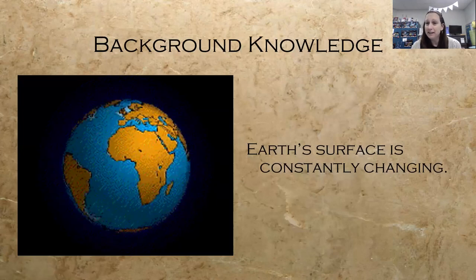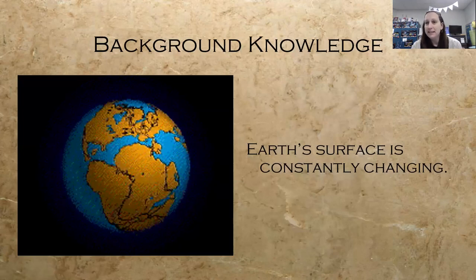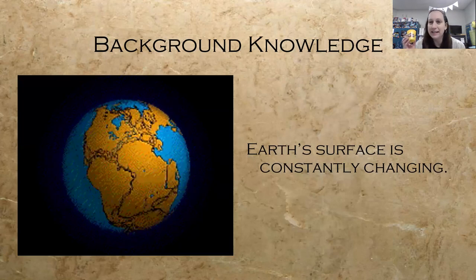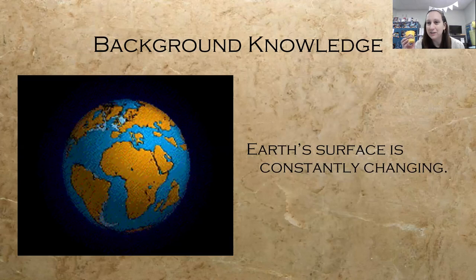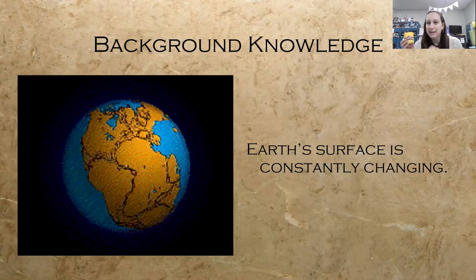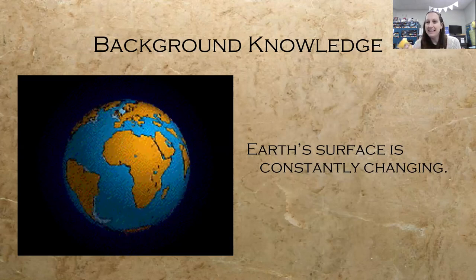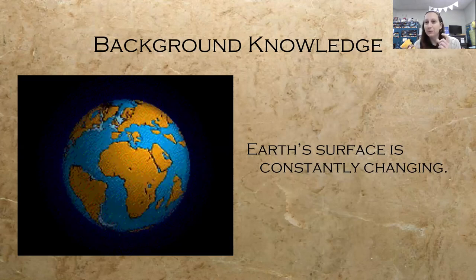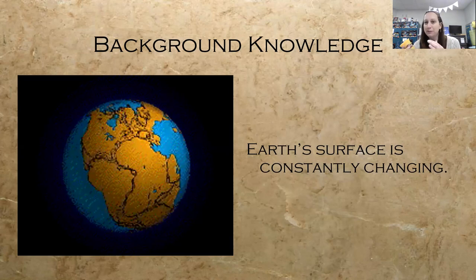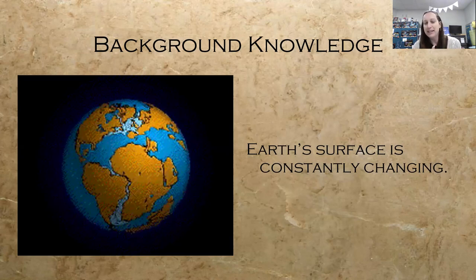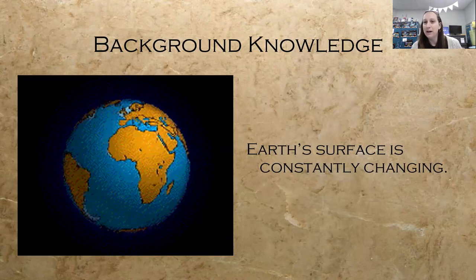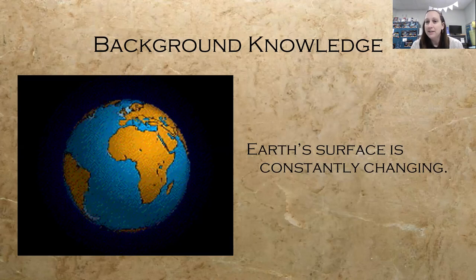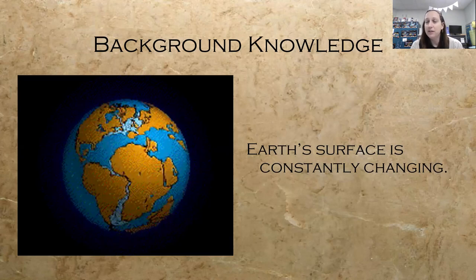The students are going to need some background knowledge for this activity. At this point, we have covered the layers of the Earth, and we always love creating representations of the layers of the Earth using Play-Doh. They make a circular model, adding more and more colors of Play-Doh until they have four different colors for the inner core, outer core, mantle, and crust. Then we cut it in half so they can see a cross-section, and they make a little key for what each color represents.